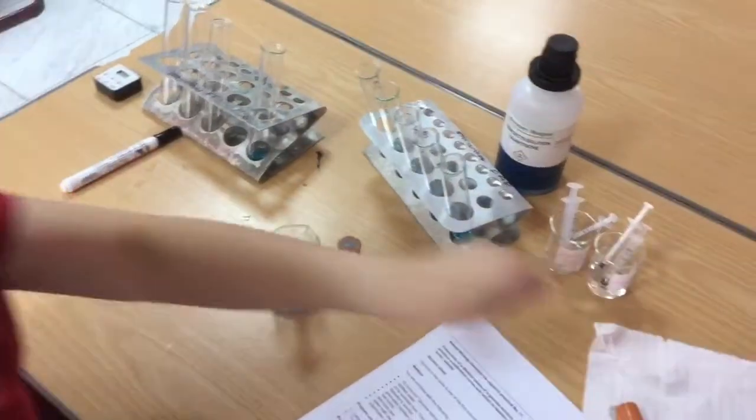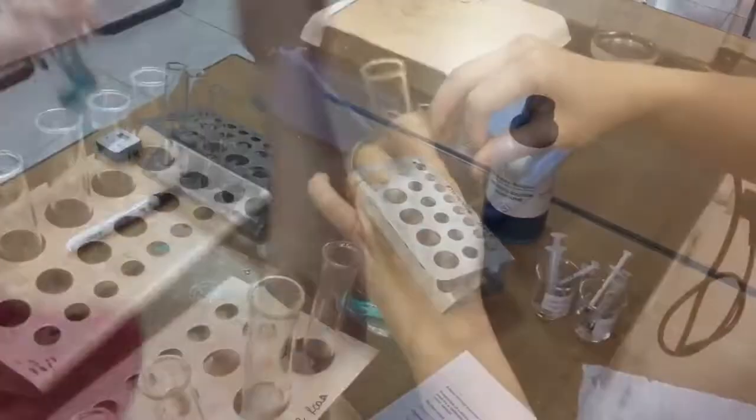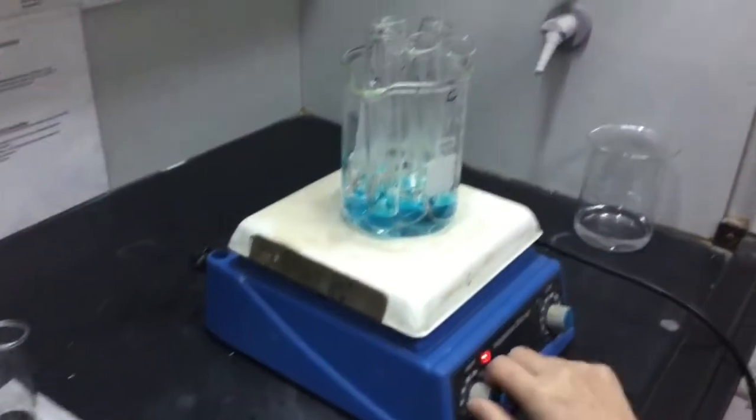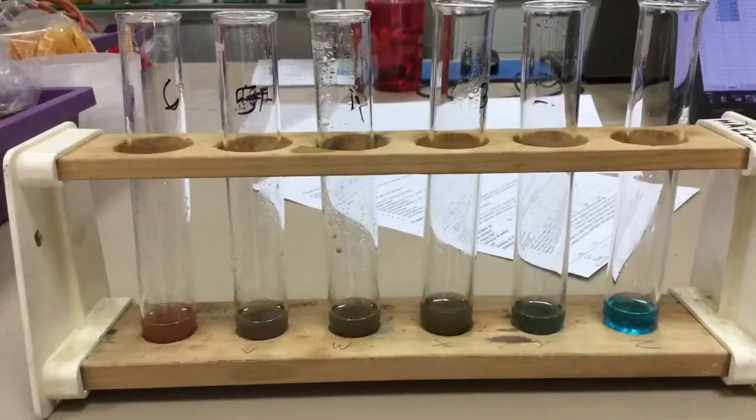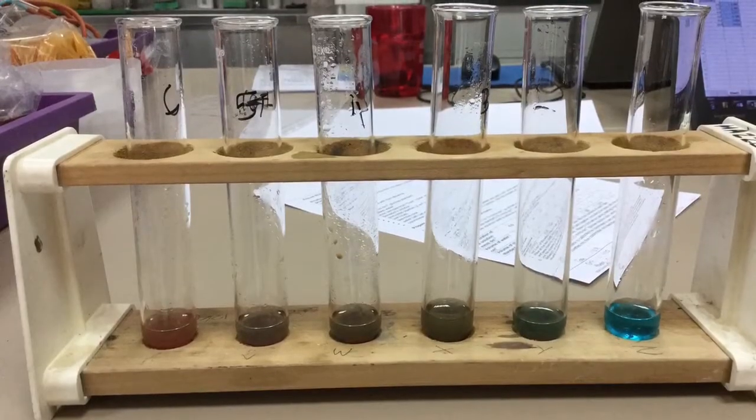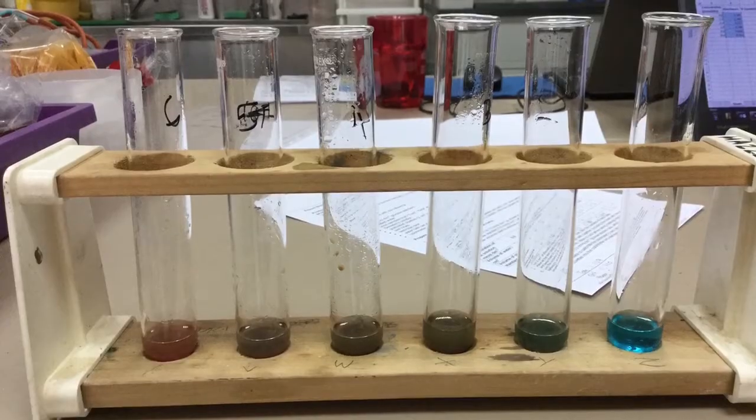I'm going to take the bungs off because I'm now going to heat them in a boiling water bath. If I left the bungs on, then maybe the bungs would pop off as the air inside expands due to the heat. I'm going to let them get to the temperature where they're boiling themselves, the liquid inside the tube, and then leave them for four minutes.